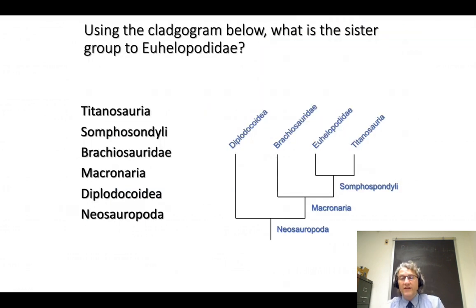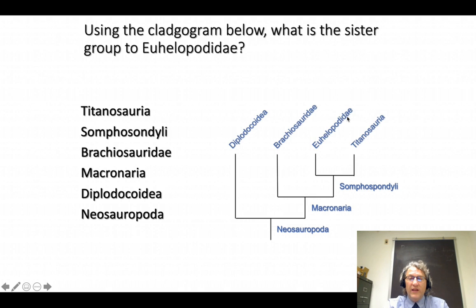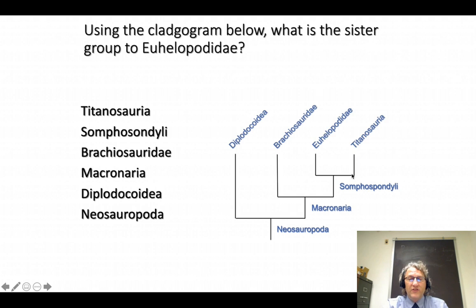Let's take a dinosaurian example. What is the sister group to Euhelopodidae? We start from Euhelopodidae and go to the first node we encounter — that node is called Somphospondyli, but that's not the sister group because Euhelopodidae are part of Somphospondyli. The other branch that comes out of that node is Titanosauria. So Titanosauria is the sister group to Euhelopodidae.